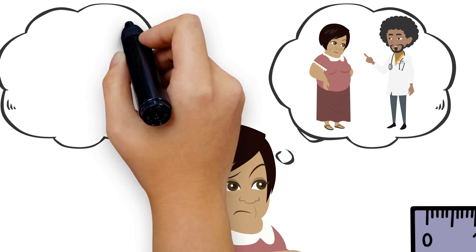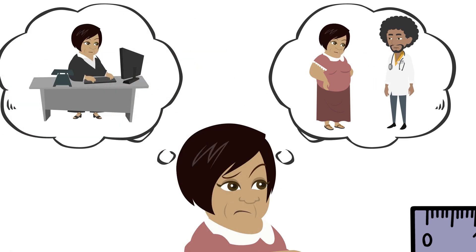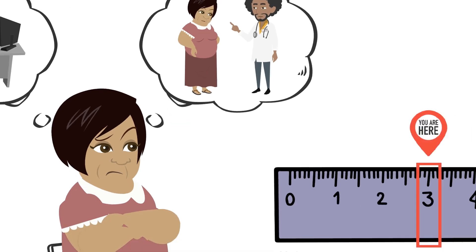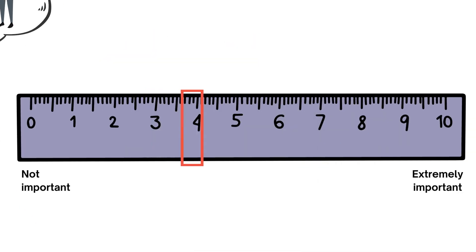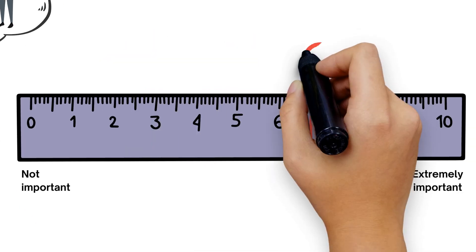Also, the job she's applying for will make it difficult for her to vape throughout the day and she is worried about withdrawal. Considering these challenges, Mila decides to change her importance rating to a 7.